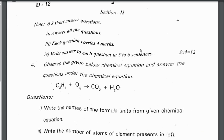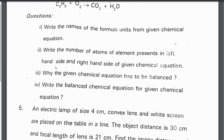We will discuss Section 2, four-mark questions. We will have three questions with no choice. Observe the given chemical equation and answer the questions. The chemical equation is: C3H8 plus O2 gives CO2 carbon dioxide plus H2O water. First question: write the name of the formula units from the above given chemical equation.